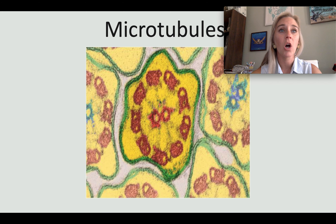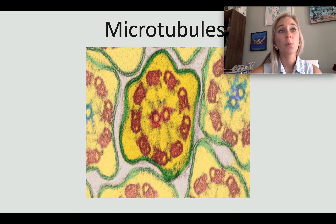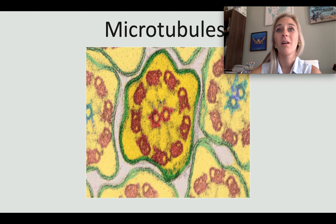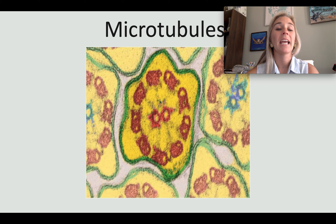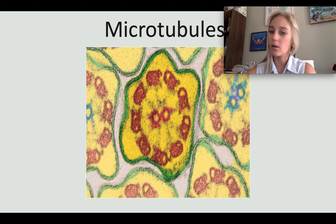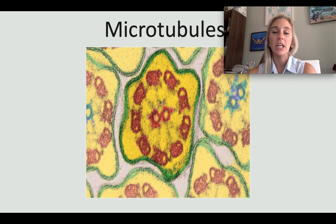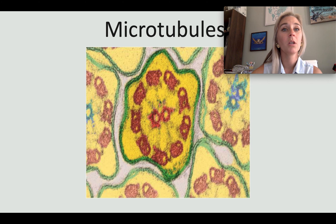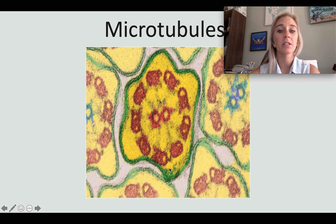Microtubules are hollow structures made of proteins known as tubulins. In many cells they are critical for cellular shape and also form the mitotic spindle during cell division. In animals, centrioles are also formed from tubulins, but centrioles are not found in plant cells. They help build projections known as cilia and flagella from the cell surface, which assist with movement.